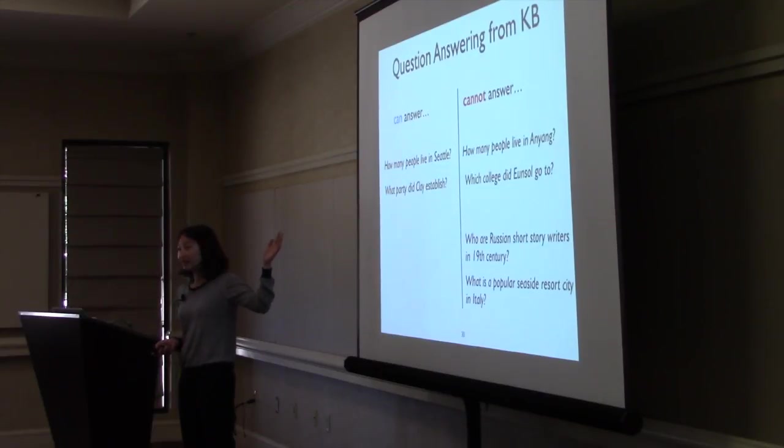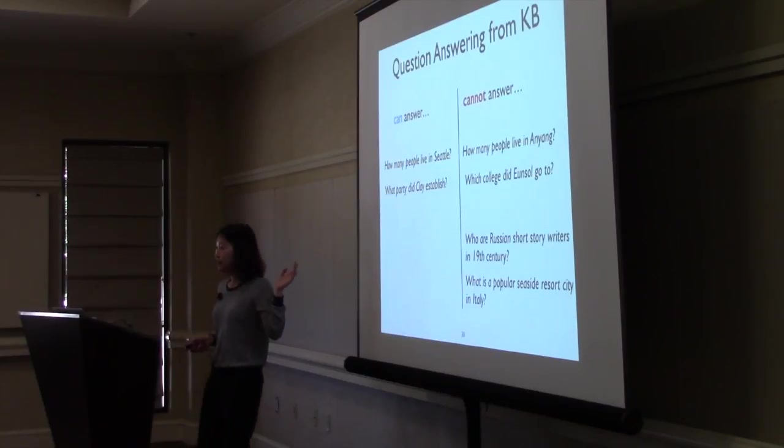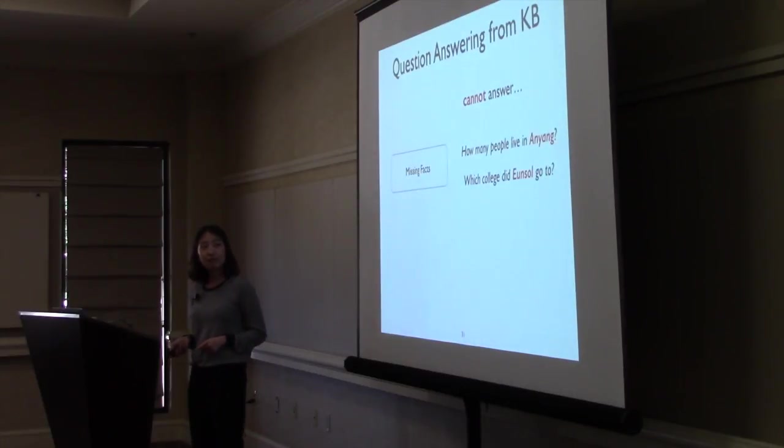The first two questions here, how many people live in Seattle, what part did Clay play, can be answered by the knowledge base and semantic parser. But those four questions cannot be answered by the knowledge base, even though you have a gold semantic parser. First two cannot be answered because the knowledge base itself is missing facts. For less popular entities like Anyang, which is a small town in Korea, the knowledge base does not have facts.